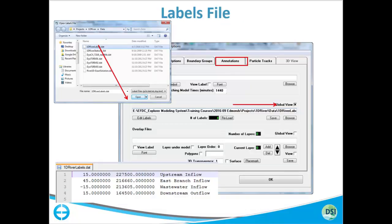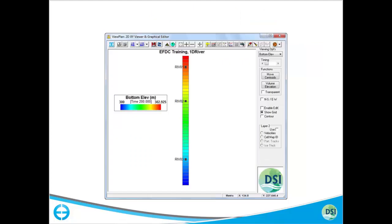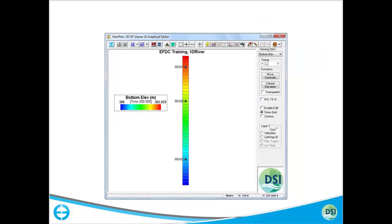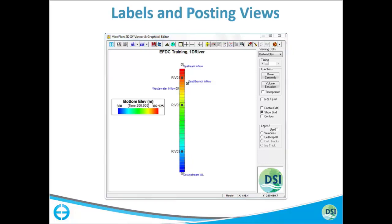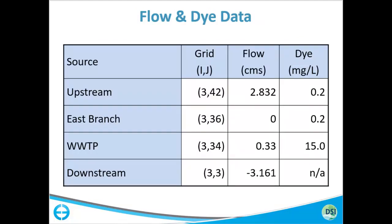If you click on 'Bottom Elevation,' it will show you places where you can add annotations. Then we are going to import locations where the boundary conditions are, as well as locations where we have measured data or the analytical solution. After importing, these are the locations where you will assign boundary conditions — you can change the symbols as you wish. Next we will import data stations, which are the locations where data is available to compare results. The blue ones are our boundary conditions and the black ones are our monitoring stations.